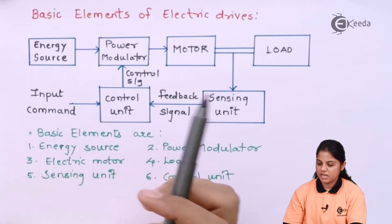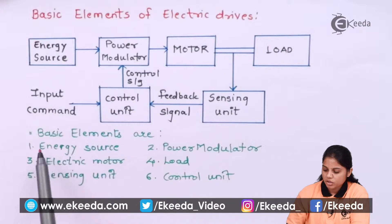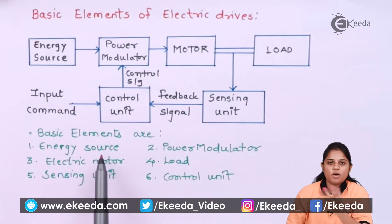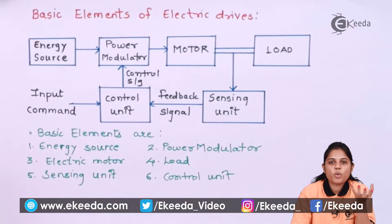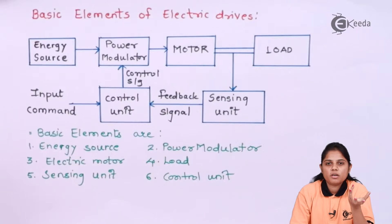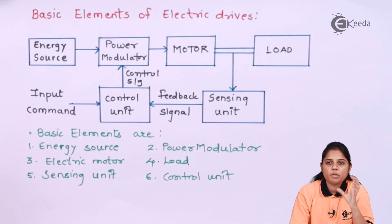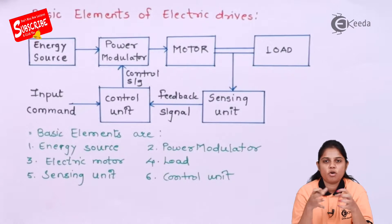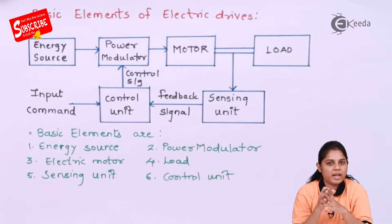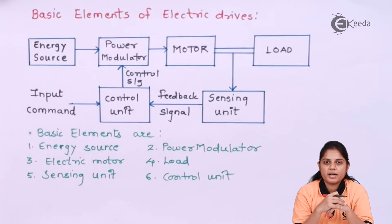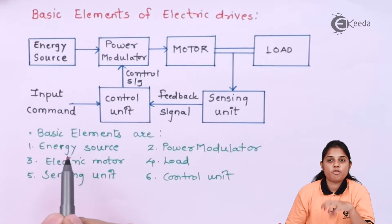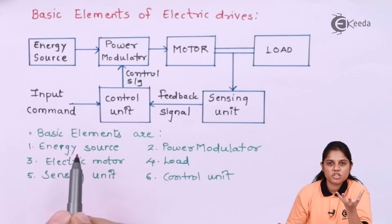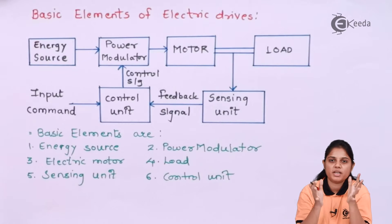Here we have a diagram of the basic elements of electric drive. The first block is the energy source. You are providing some kind of energy, and how you are going to control the speed or the motion is by controlling the power or energy provided. For any circuit or device, you need some supply — either voltage or current. That voltage supply is the energy source, from where exactly you are going to provide energy to that particular drive or circuit.